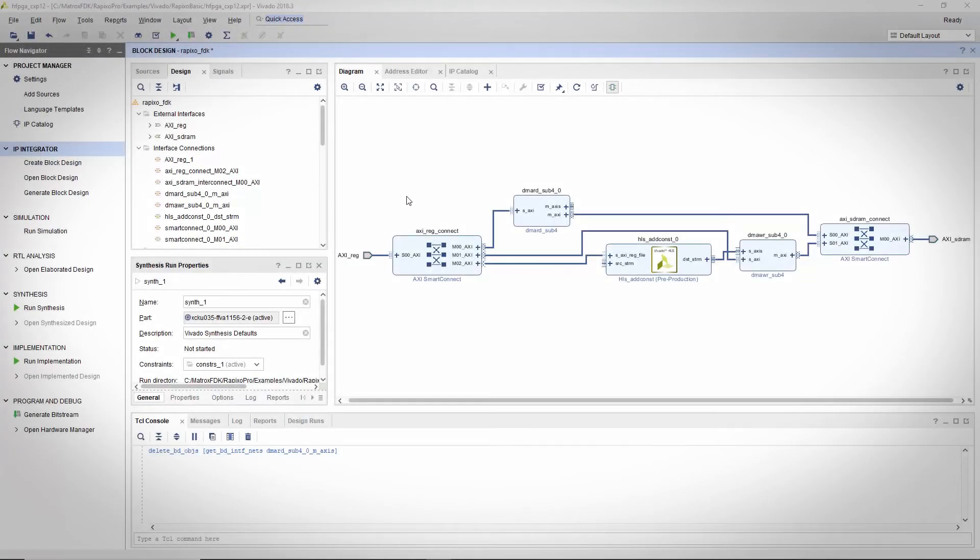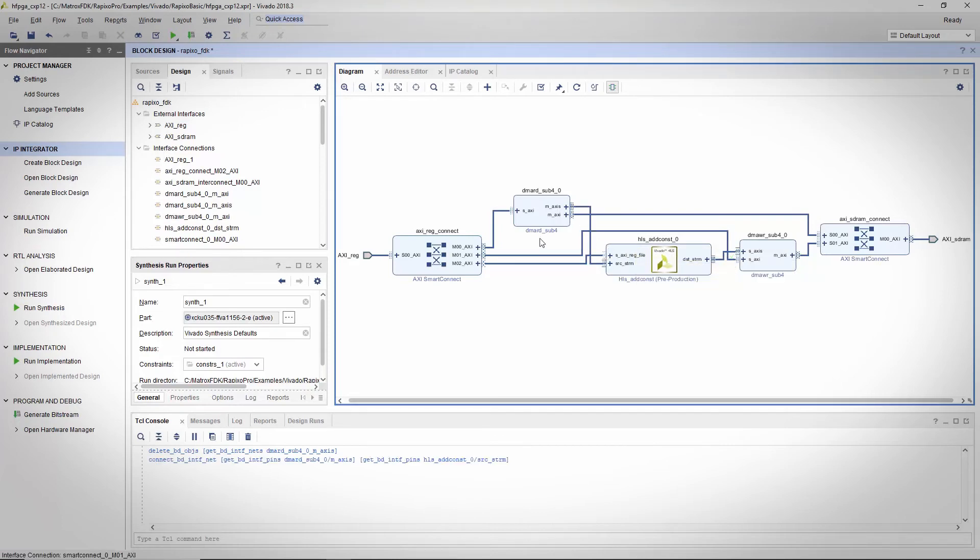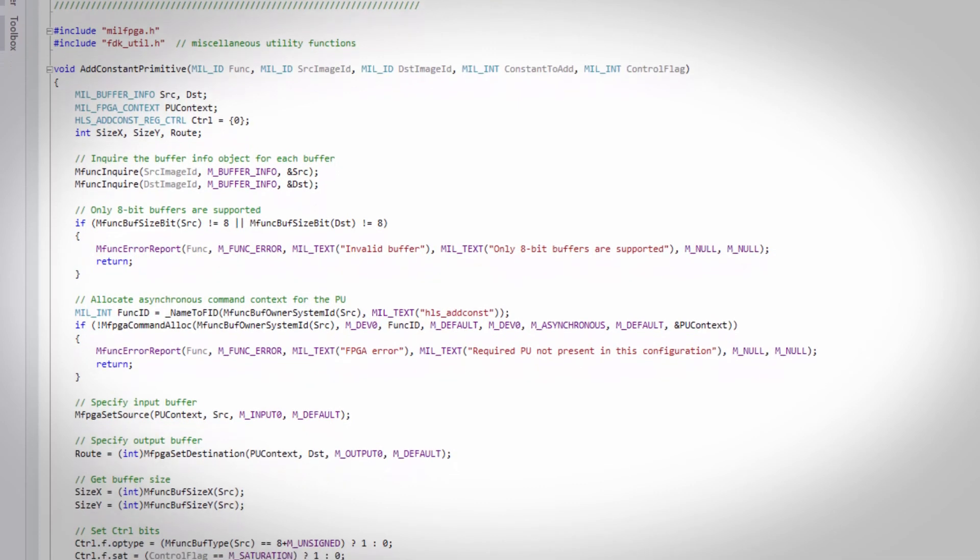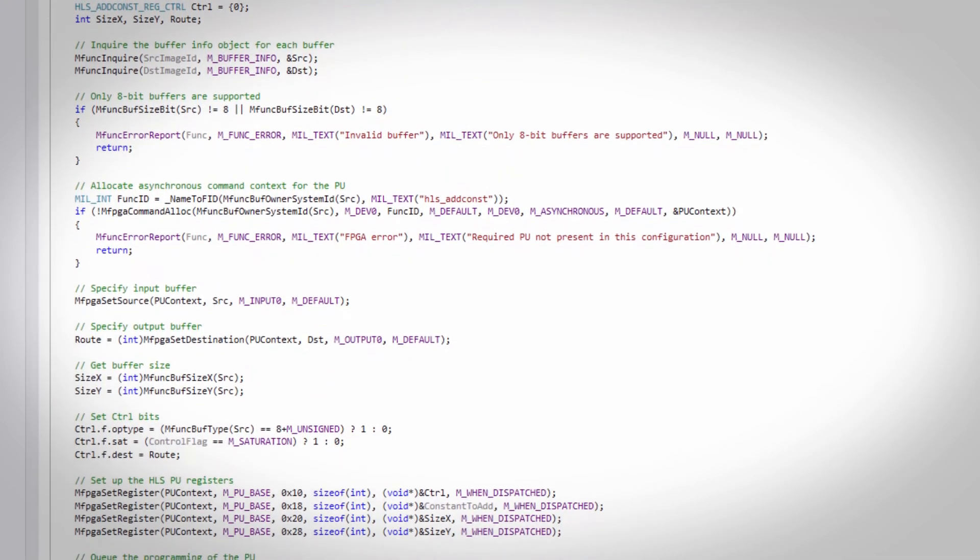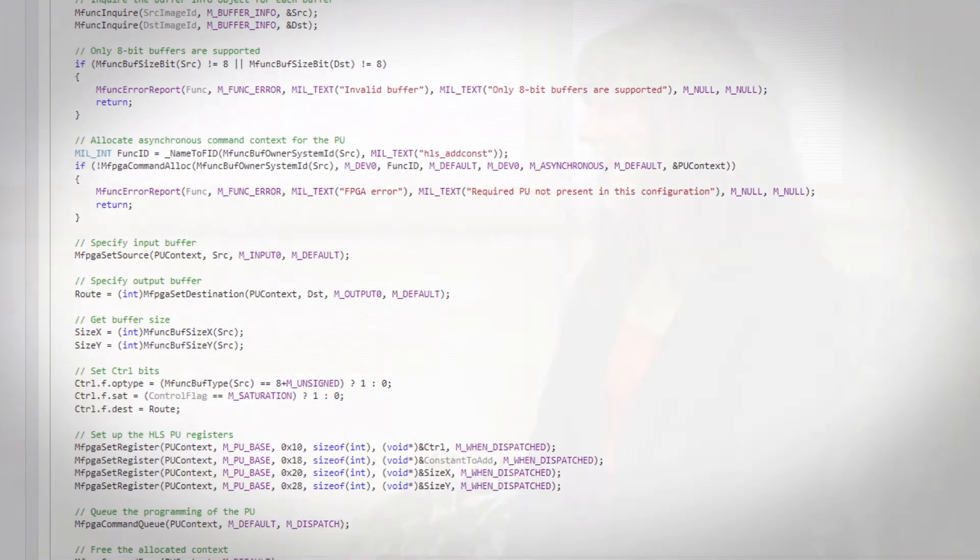From there, it's really easy to integrate one or many processing units using Vivado IP Integrator and generate the bitstream for the Rapixos CXP Pro. The custom bitstream is then accessed and controlled from the user's application developed using the MIL or MIL-Lite Software Development Kit.